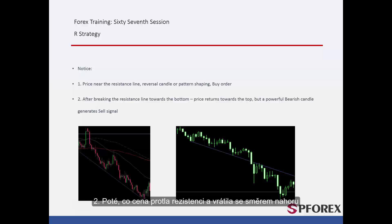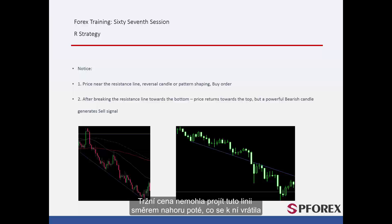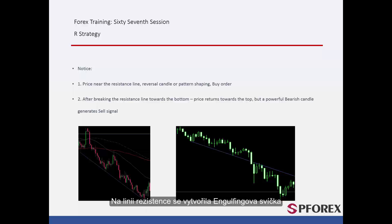After price passes a resistance line and returns towards it, if a powerful bearish candle forms on the resistance line, then a reliable sell signal will be generated. On the right graph, market price has passed the resistance line, but could not pass this line towards the top after the price returned towards it. An engulfing candle has formed on this resistance line, so a trader could place a sell order.